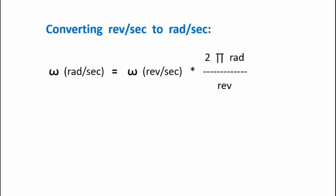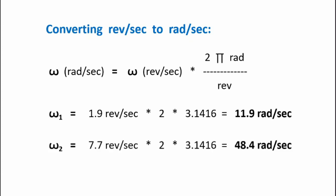Now, that means we'll have to convert revolutions per second to radians per second. Because when I analyzed my video, I looked at one revolution, counted how many frames, determined how fast it was going. So that was in revolutions per second. So to convert that to radians per second, I have to multiply by 2 pi radians per revolution. So for omega-1, which was 1.9 revolutions per second, I come up with 11.9 radians per second. And for omega-2, I come up with 48.4 radians per second.